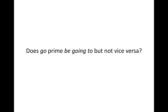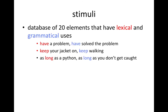In order to find out, David and I designed an experimental study to assess whether the asymmetric priming hypothesis makes the right predictions about language processing in real speakers. We constructed a database of 20 elements that have both lexical and grammatical uses — things like 'go' and 'be going to,' or lexical 'have' expressing possession in 'I have a problem' versus grammatical 'have' as an auxiliary of the perfect in 'I have solved the problem.' We chose 20 such pairs. Full materials are available in our published papers.